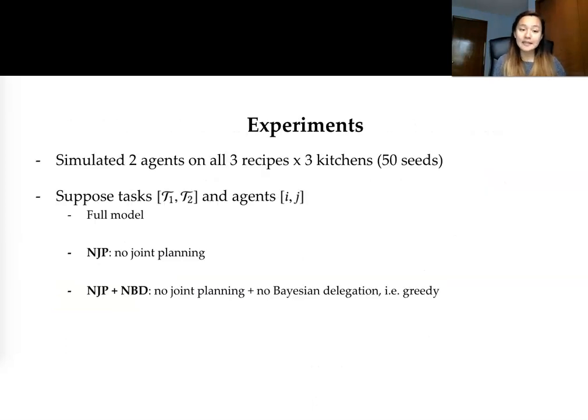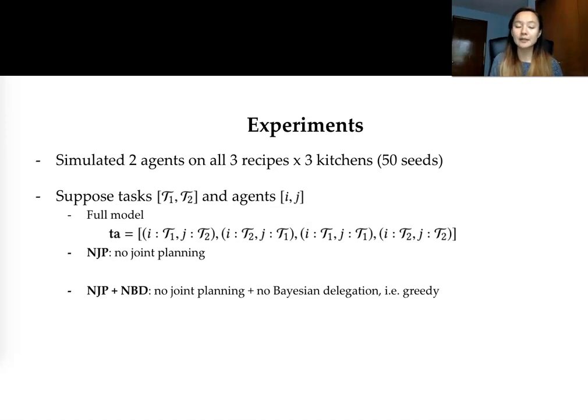Moving on to our experiments, we simulate our experiments on two agents and on all three recipes and the three kitchens that you saw before on 50 different seeds. We also evaluate our full model against lesions of itself. To take an example of understanding what our lesions are doing, assuming that we have two tasks and two agents, this is the task allocations that our full model is considering, where it considers all combinations of tasks to agents.